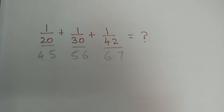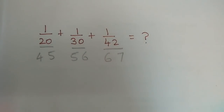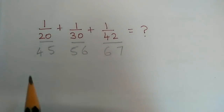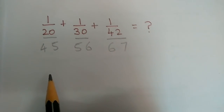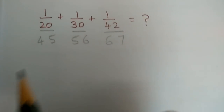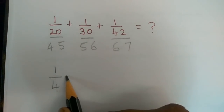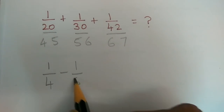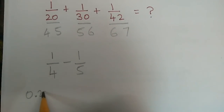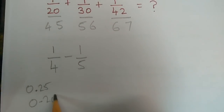We have 3 terms. If you have a fraction like 1 by 4 minus 1 by 5, the value of 1 by 4 is 0.25 and the value of 1 by 5 is 0.20.